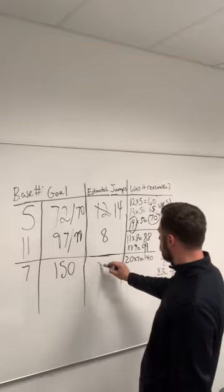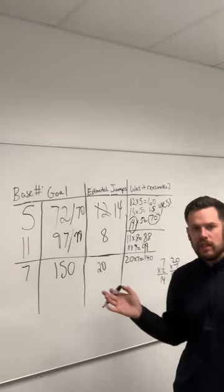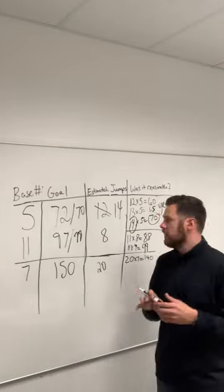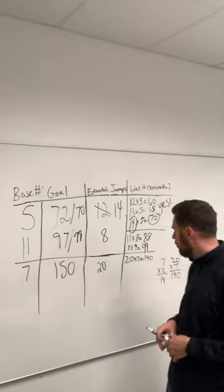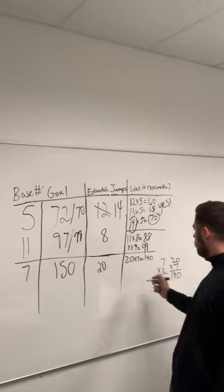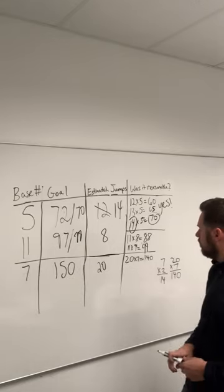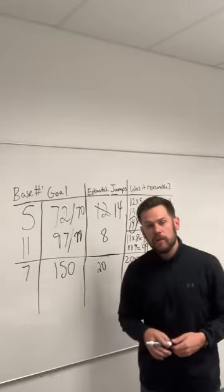Let's say that 20 is our estimate—that's our estimate of how many jumps. 20 times 7 is 140. That's pretty close to 150. 150 minus 140 is 10.